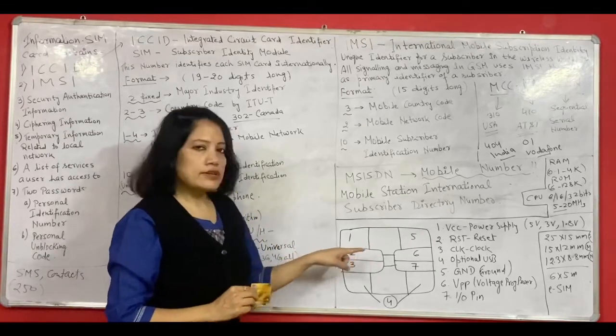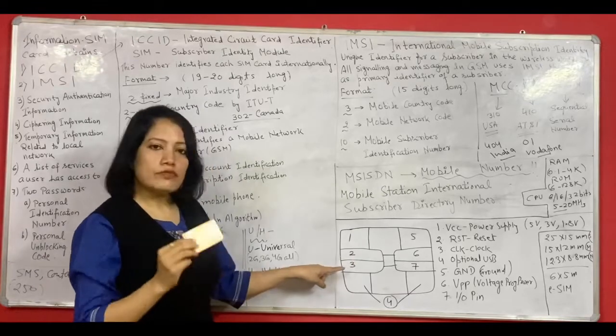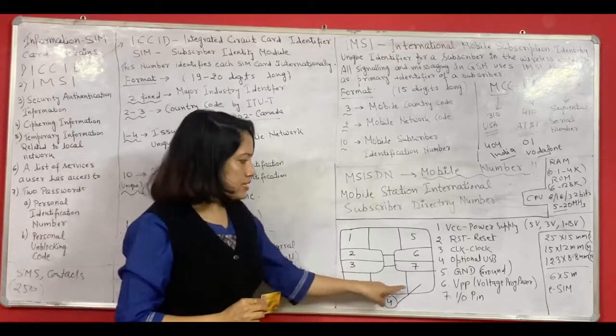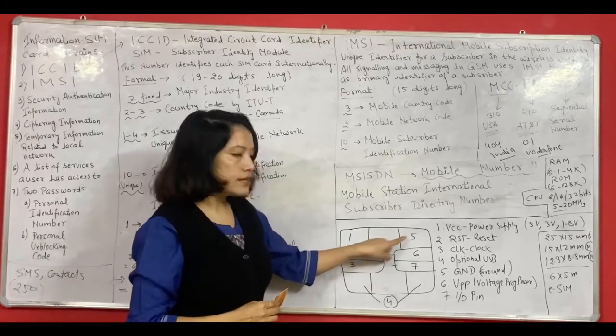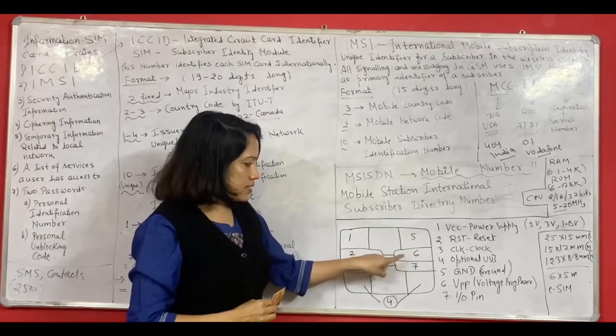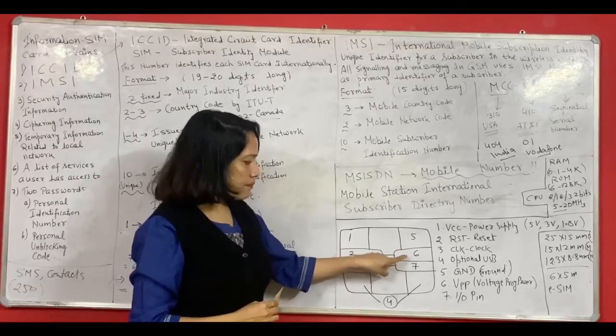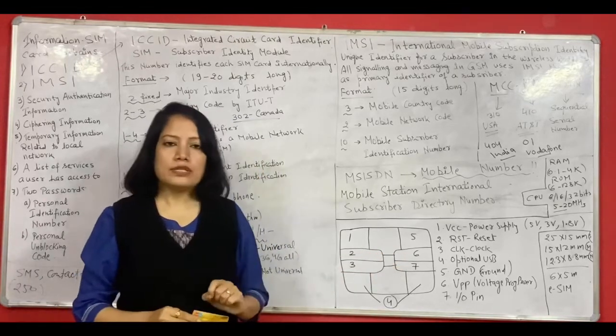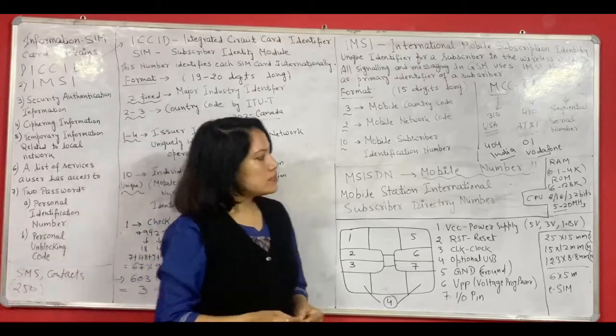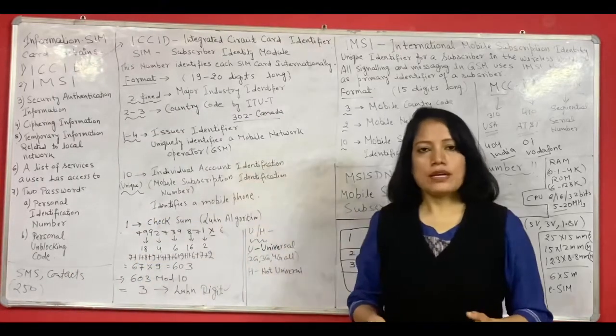Now 2 is for reset. 3 is for clock. 4 is for optional USB. And 5 is ground. 6 is voltage programmable power. And 7 is your input output data pin. So this is all about the SIM card.